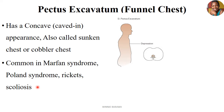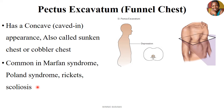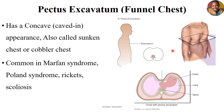Funnel chest is commonly found in Marfan syndrome, Pollen syndrome, rickets, and scoliosis. These conditions involve changes to the vertebral column — orthopedic-related illnesses that affect the vertebral column — or conditions affecting the nerve supply to the chest, leading to relaxation and sinking of areas around the sternal angle. The result is the concave, caved-in appearance known as pectus excavatum or funnel chest.